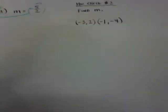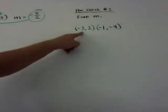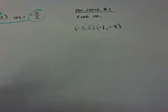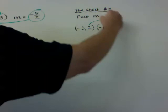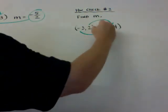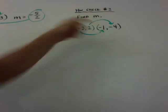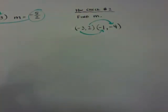Here is homework check number 2. Please find the slope of these two points: negative 3 comma 2 and negative 1 comma negative 4. Find the slope — be careful. Make sure you do change of Y over change of X. For your homework, I want to see the arrows so I can confirm you're putting Y over X, not X over Y — a very common mistake. Hope this helps. Take care, and I'll see you later.